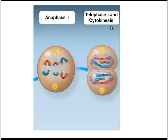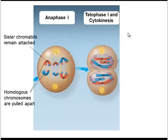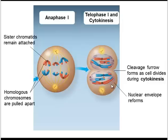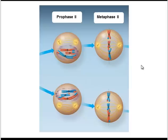Meiosis I concludes with telophase I and cytokinesis. A cleavage furrow is forming as the two cells separate. Cytokinesis is literally the division of the cell. You can also see that the nuclear envelope is starting to reform and the spindle has disappeared. So that's meiosis I — we now have two cells, but we're not done yet; we need to go into meiosis II.